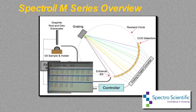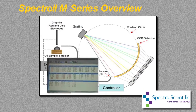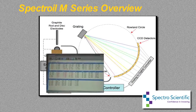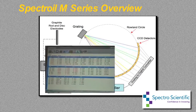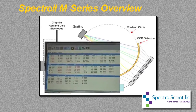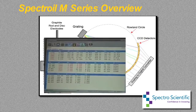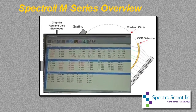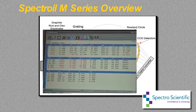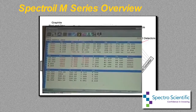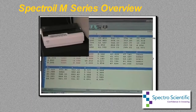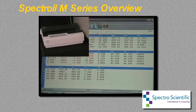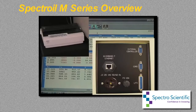The intensity of light is proportional to the concentration of the elements present in the sample. The readout system presents this information to the operator on the spectrometer's video screen, external printer, or sends the information to a database such as a laboratory management system.